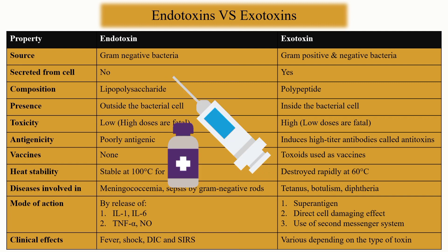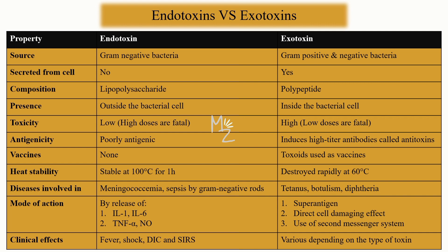Regarding vaccines: certain toxoids are produced from exotoxins and are used as vaccines. In the case of endotoxin, no toxoids are produced, so there is no vaccine for endotoxin. For heat stability: endotoxin is stable at 100 degrees Celsius for one hour, while exotoxin is rapidly destroyed at 60 degrees Celsius.